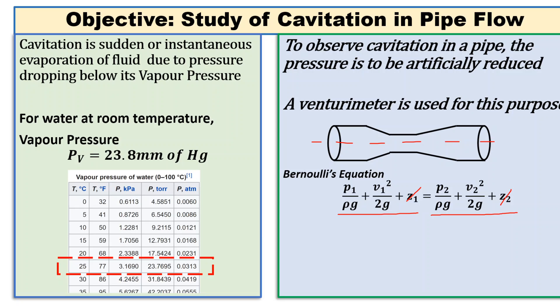If velocity increases, then for the sum to remain constant, pressure must decrease. This pressure term must decrease, and it can decrease only by reducing the pressure.